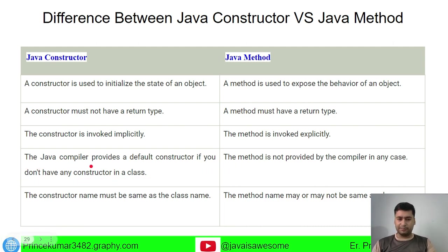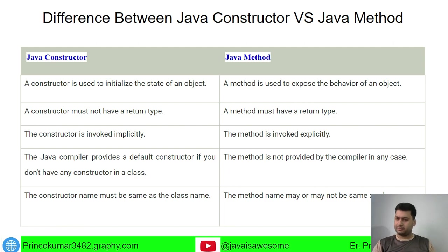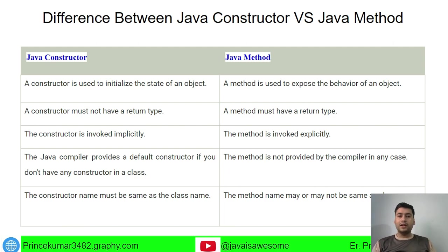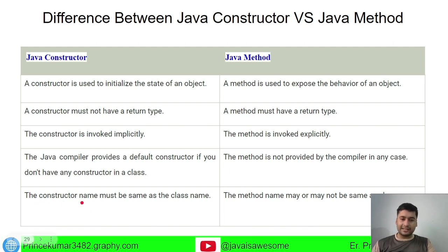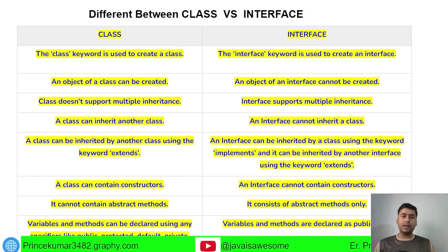The constructor name must be the same as the class name — that is a very important point. If you write any other name, it will be treated as a method and you have to give it a return type. A method name may or may not be the same as the class name. Open Eclipse and practice writing constructors, calling them, giving a return type to a constructor, and removing the return type from a method so you can analyze and understand these differences.